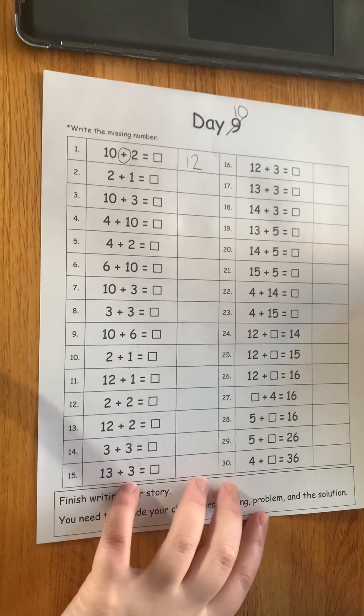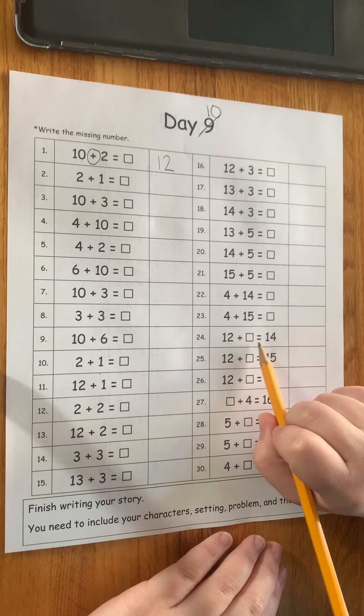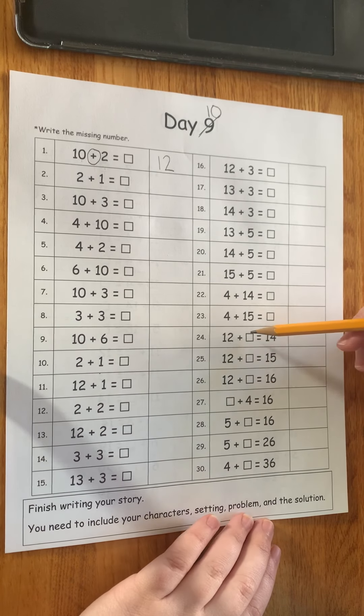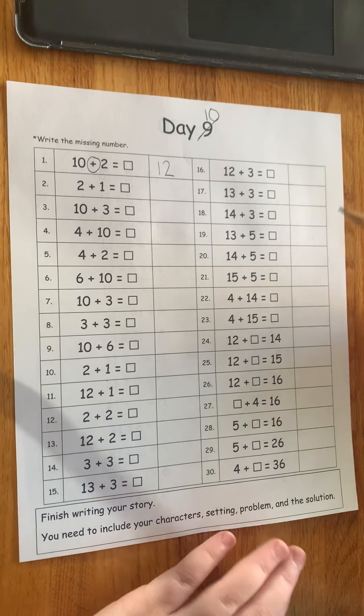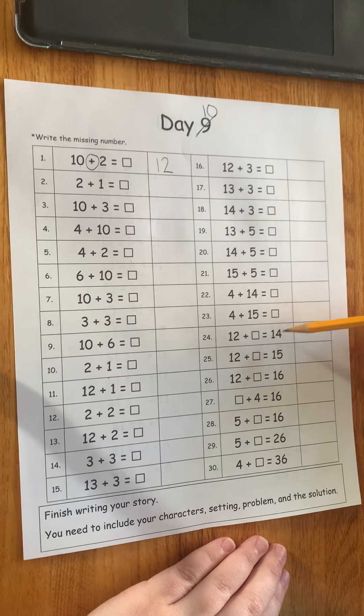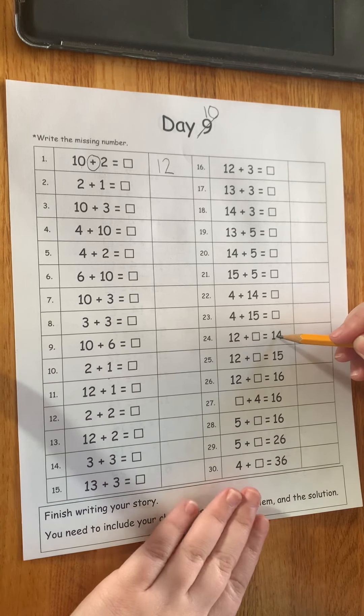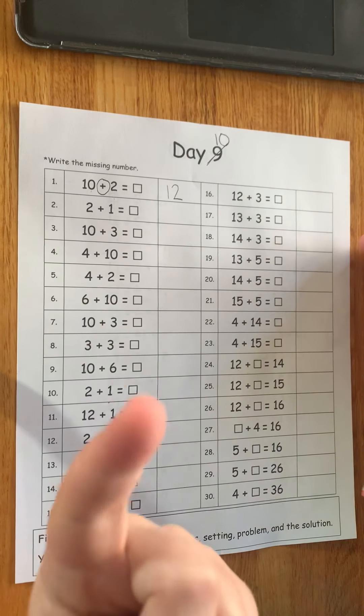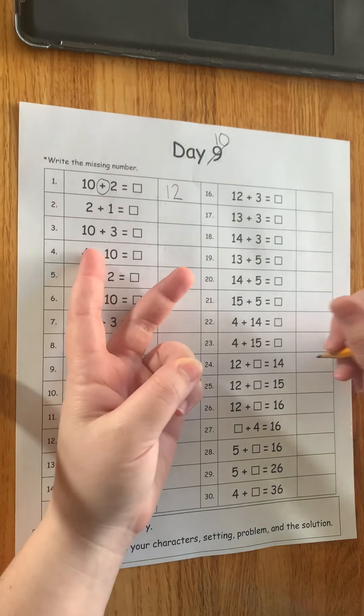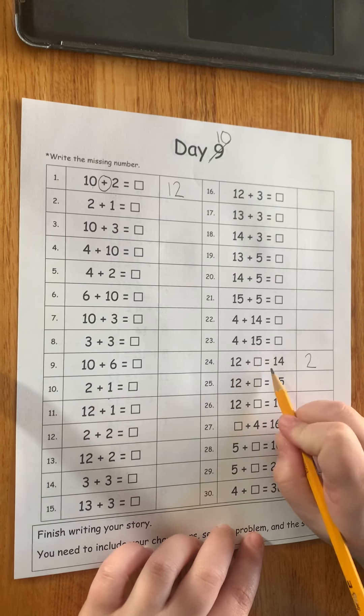I'll pick a couple of other ones to do with you. I'll do number 24 down here. This one is written a little differently. You are not finding the total anymore. You're finding the part. One of the parts is missing. So 12 plus something equals 14. So we need to figure out how to get from 12 to 14. So I'm going to count on. I'm going to start at 12. Then I'm going to count 13, 14. So how many did I need to get to 14? 2. So 12 plus 2 equals 14.